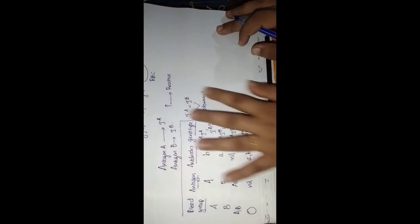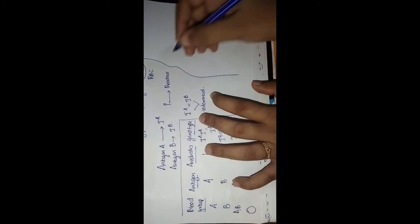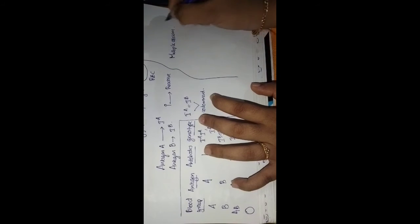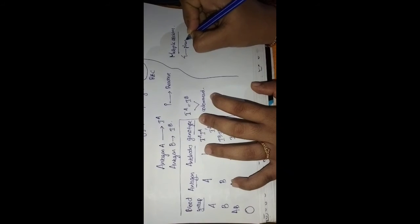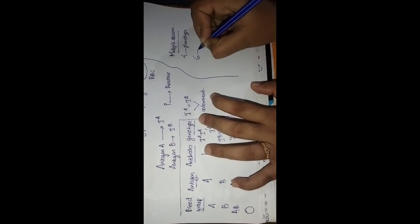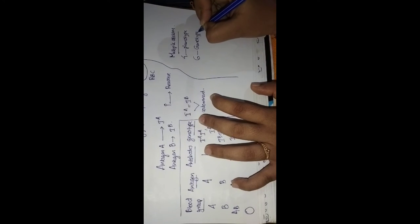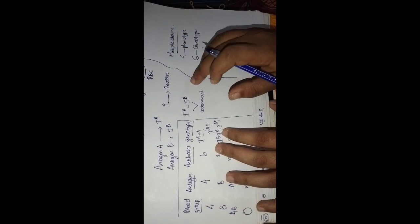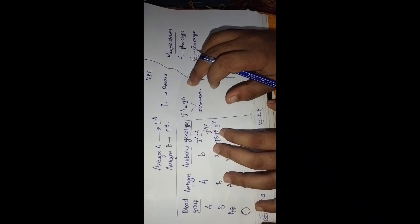In multiple allelism, there are four phenotypes and six genotypes. That concludes the topic of multiple allelism. The next video will cover questions from incomplete dominance, multiple allelism, and monohybrid crosses — please watch that video as well. Thank you.